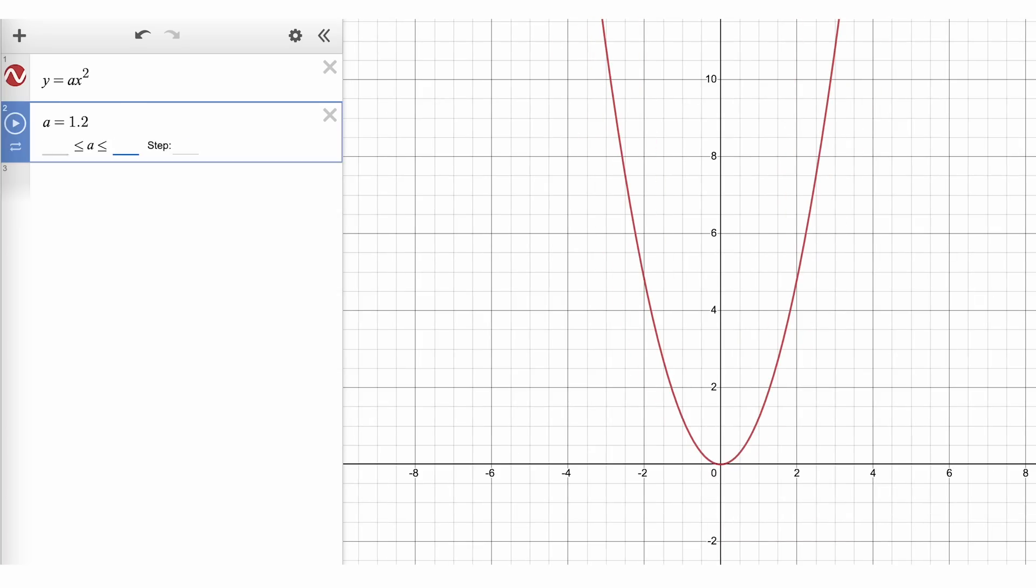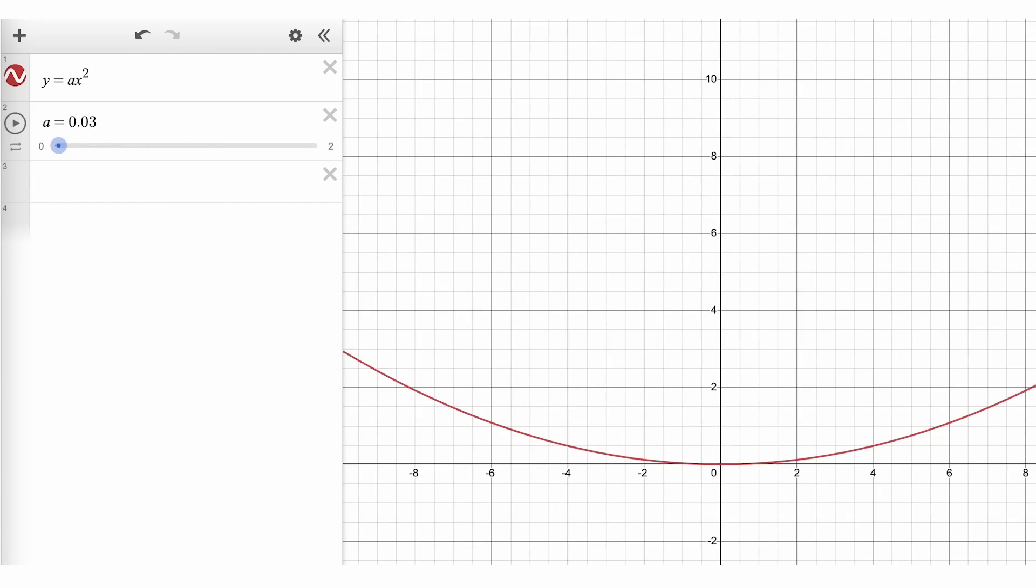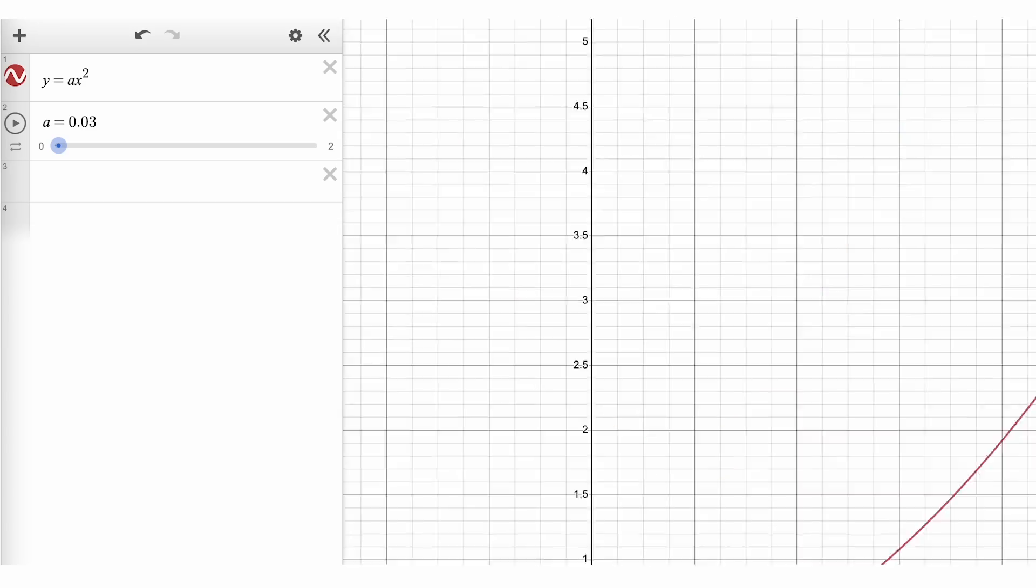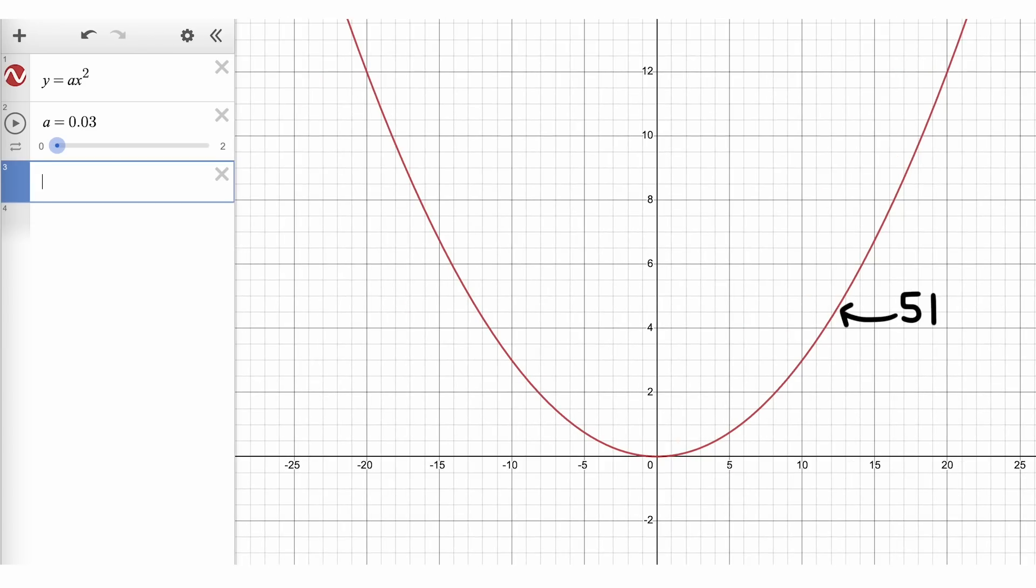If we change the value of a, then it changes the shape of the graph. We need to find the a that gives us a parabola that stretches 50 units and has a length of 51 units between those 50 units.